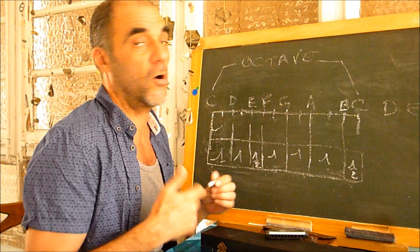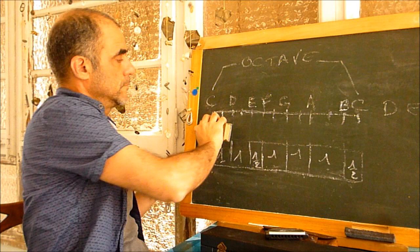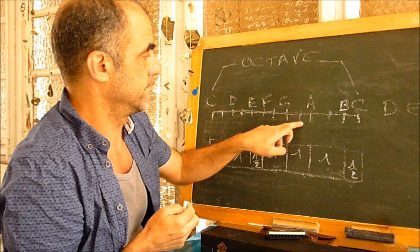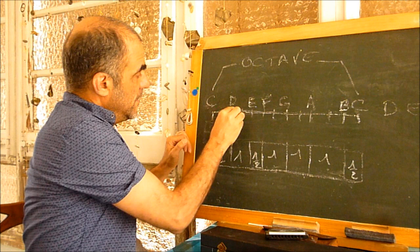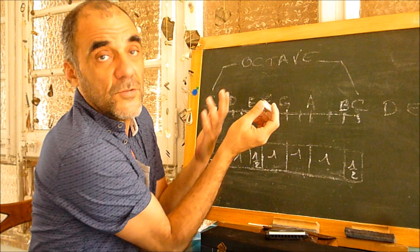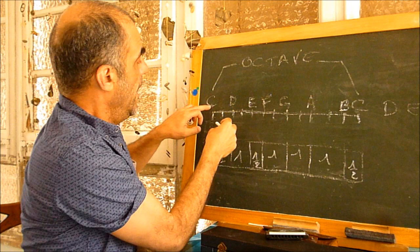Now that we have the structure of the major scale, we could make other scales. First of all, we have to know something. We keep here the structure of the major scale. We did not put some names on these notes, but they have names. Between C and D there is a half tone — it exists, it's a note, and we will use it, not in this scale but we will use it.